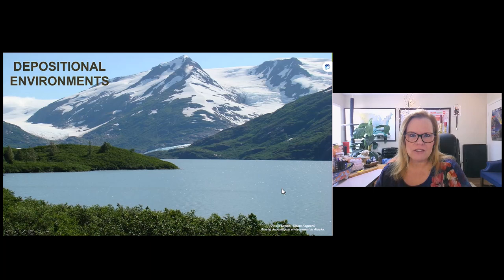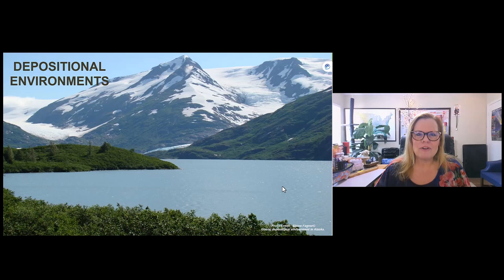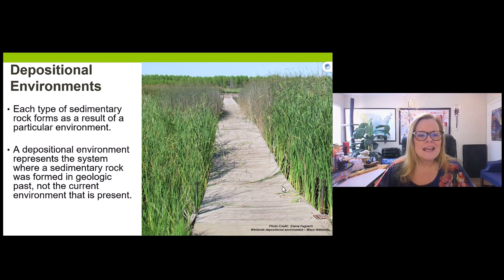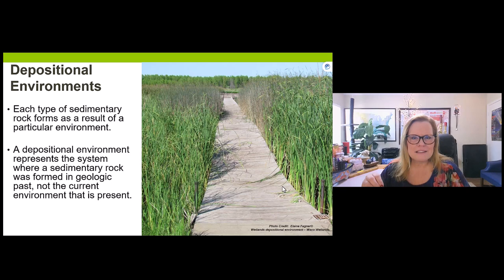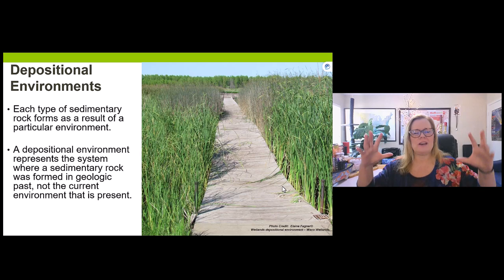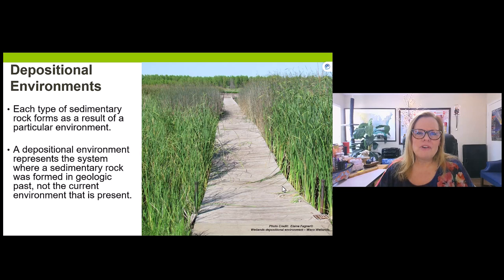This lake environment is known as a lacustrine environment. We have to look at the rock layers we find to decipher how they were made. The Waco wetlands represent a swamp environment. Each sedimentary rock forms in a depositional environment, and the size of material in that rock tells us about energy conditions — tiny microscopic grains require very calm, low-energy water, while giant boulders require enormous energy to transport.